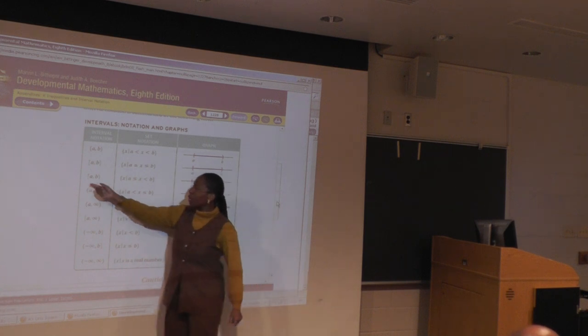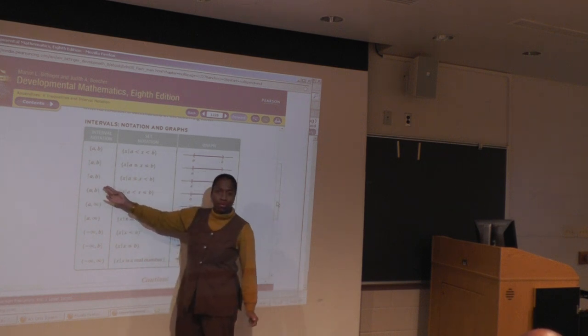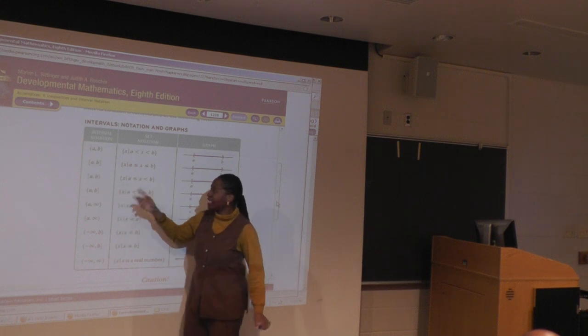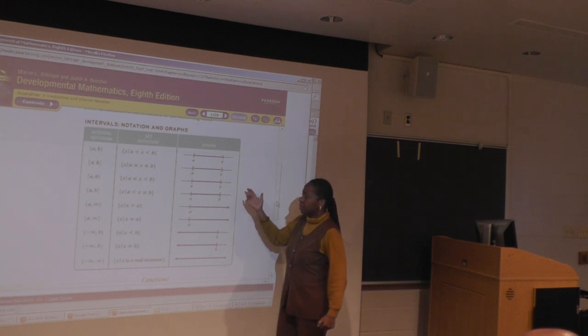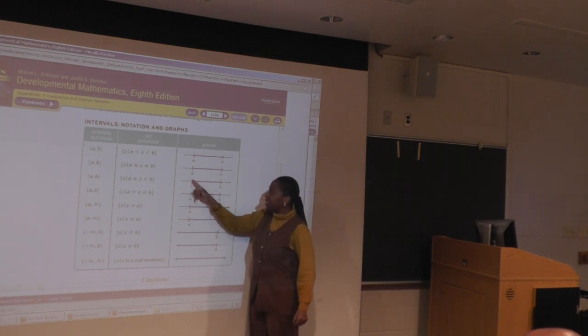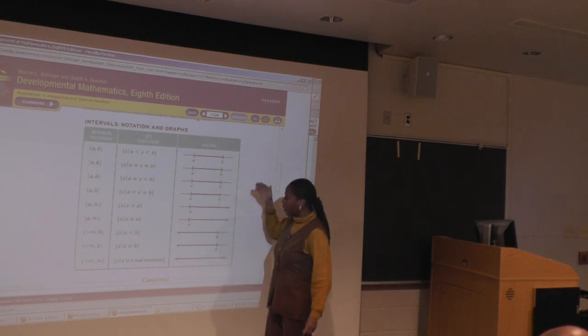Now here, which endpoint is included here and which one isn't? A is included. A is included. What's not included? B is not included. B. And so then that's that graph. Again, we can have this as the closed circle and the open circle. And it takes you through all of the different.